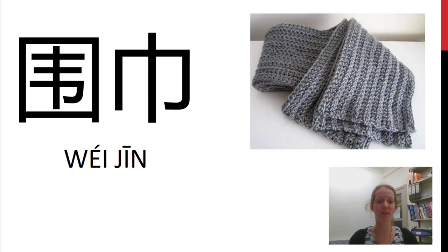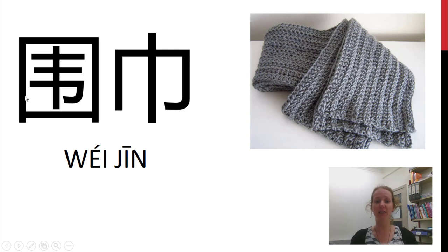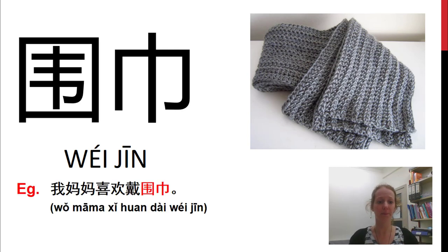这是什么? 这是围巾. 围 means to surround something, and 巾 is like a small cloth of some sort. 我妈妈喜欢戴围巾. Remember, 戴 is used for accessories.